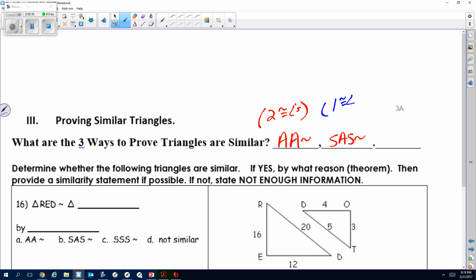Then we have side-angle-side similarity. For this one you need one congruent angle and two sides proportional, meaning they have the same ratio. And then the last one is side-side-side, which means for this to work you need three sides proportional.